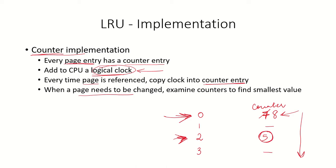For example, if page 2 has a counter value of 5 and page 0 has a counter value of 7, page 2 was referenced earlier and is the least recently used. However, the drawback of this implementation is that the whole page table needs to be searched to find the counter with the smallest value.